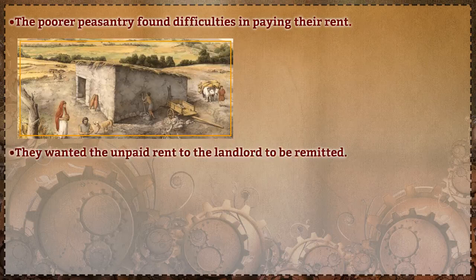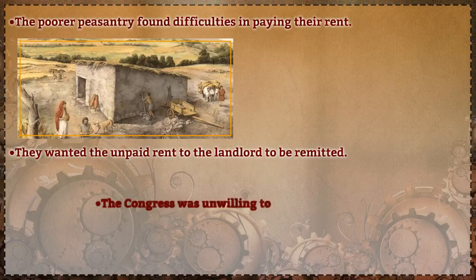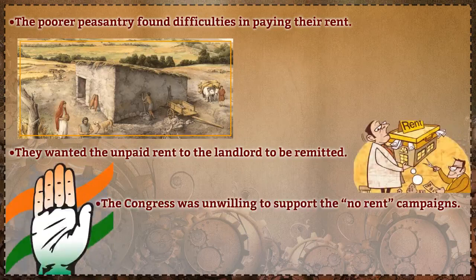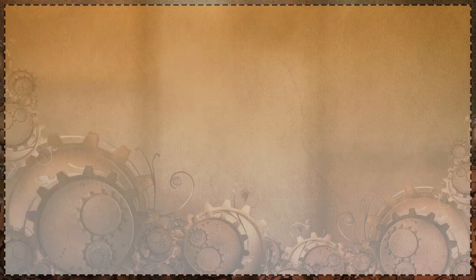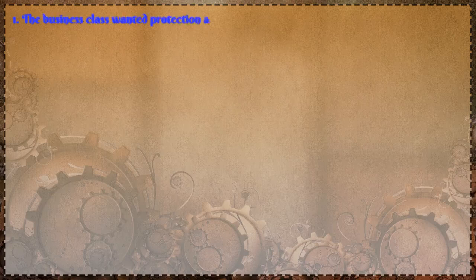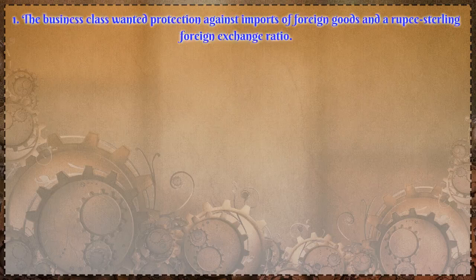The poorer peasantry found difficulties in paying their rent due to the depression and the decrease in cash income. They wanted the unpaid rent to the landlord to be remitted. However, the Congress was unwilling to support the no-rent campaigns due to the fear of upsetting the rich peasants and the landlords.